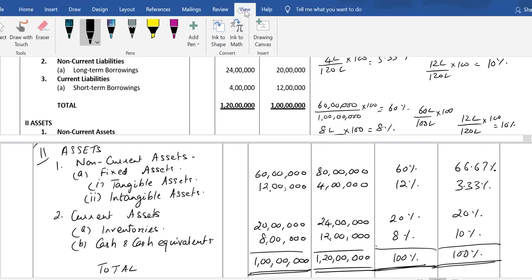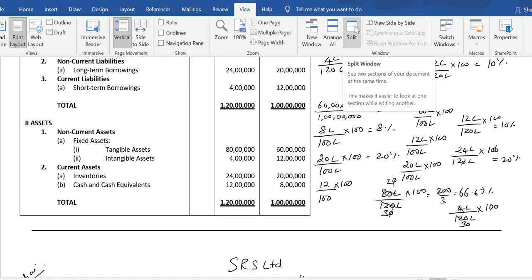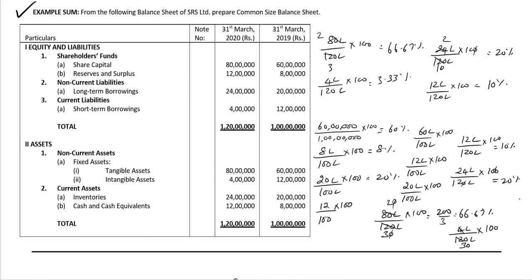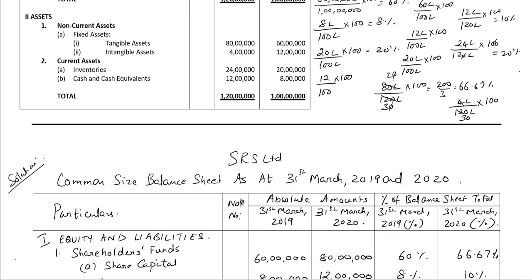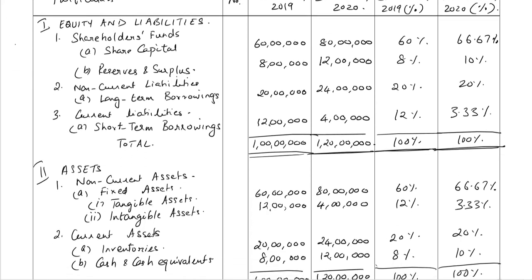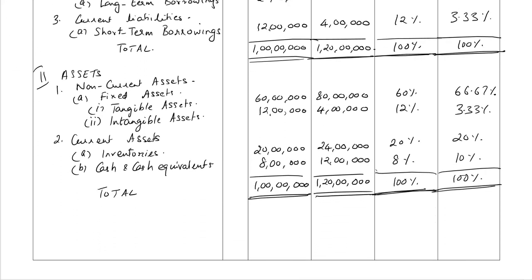I will remove the split and we will view the entire answer. So this is the example sum on top — we were asked to prepare the common size balance sheet. The solution: the first screen and the second screen.